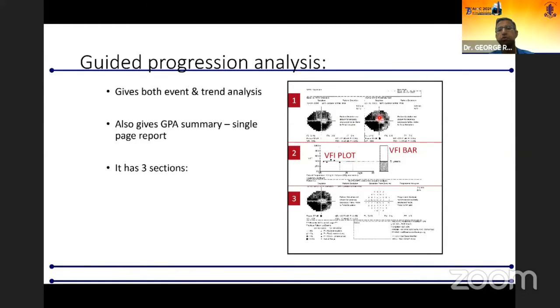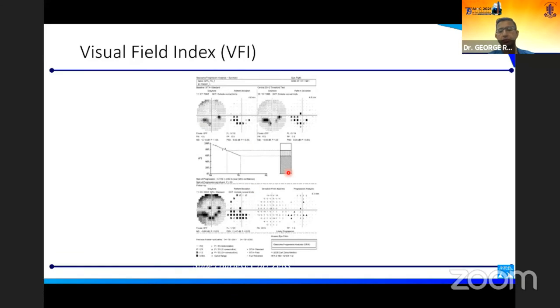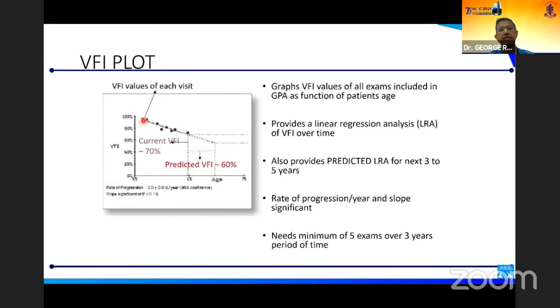This is what a printout would look like. You would have the two baseline tests there, a VFI plot, and a VFI bar here. The third section is where you will have the event analysis. This is what a printout would look like for somebody with progressing disease. The VFI plots the VFI value at each plot and then predicts this over a five-year period. This is done by linear regression and it will give you a value here: minus 3 plus minus 0.9% per year with 95% confidence intervals.